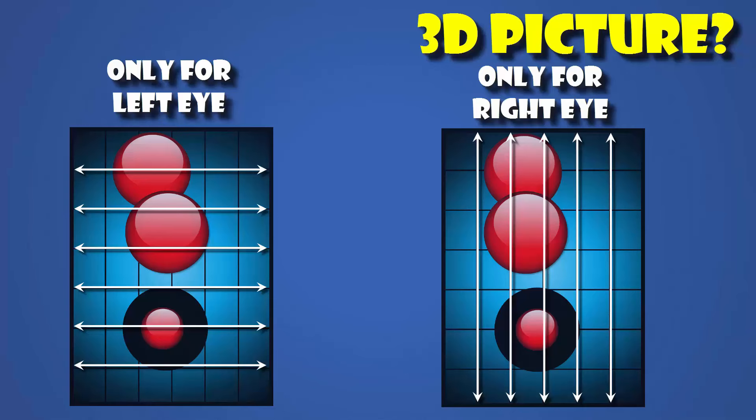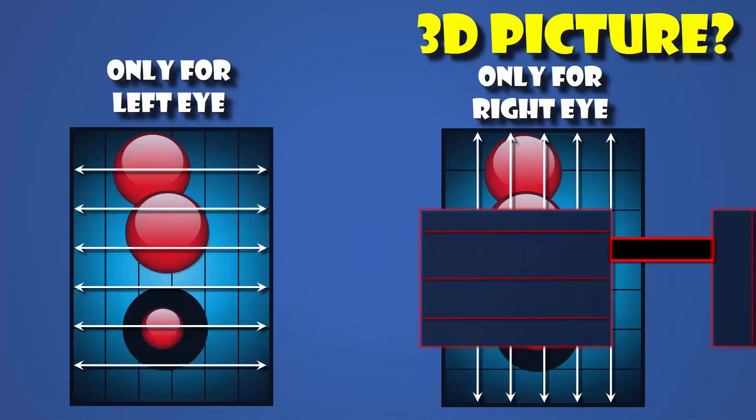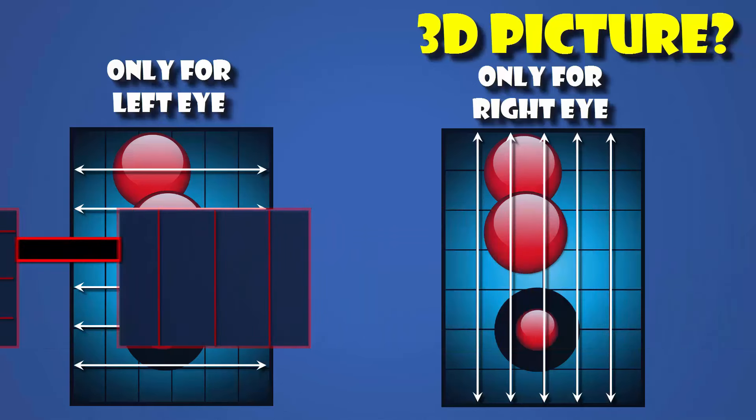Then make a pair of glasses using Polaroid filters in which the left side contains horizontal pass axis and the right side the vertical pass axis. Once you wear it, the left filter will only allow the left image, horizontally polarized one. And similarly the right side filter, the right image.